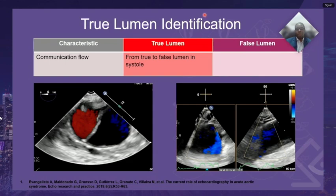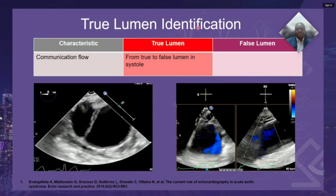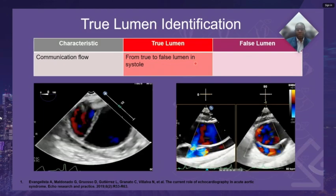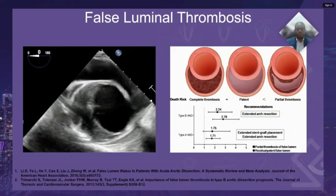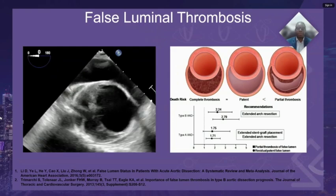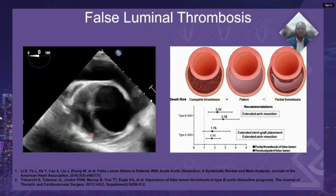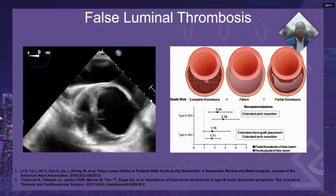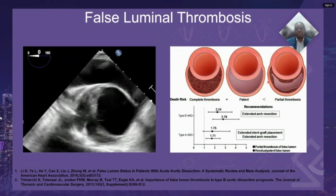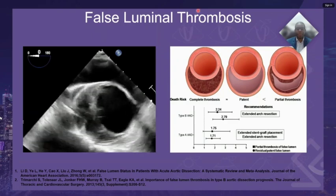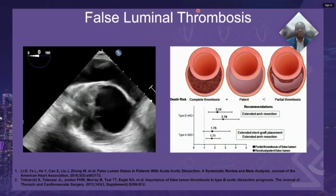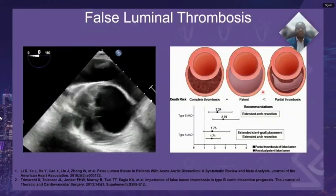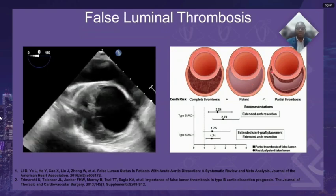When color Doppler is applied at the site of an intimal tear, communication flow will usually reveal flow from the true to the false lumen during systole. An echogenic mass separated from the intimal flap and aortic wall inside the false lumen may be indicative of thrombosis, which may be homogeneous in complete thrombosis or heterogeneous in partial thrombosis. Currently the literature suggests that mortality is worse with a residual patent false lumen relative to complete thrombosis, and even worse in patients with partial thrombosis of the false lumen.